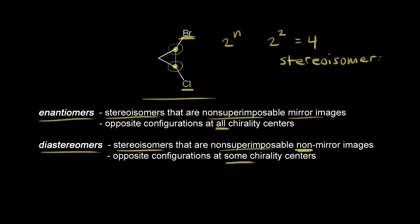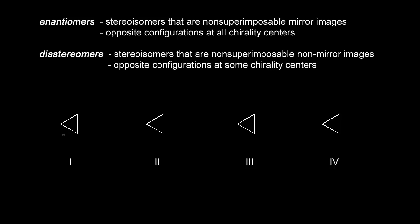2^n is just a maximum, and we'll talk about that in later videos. So let's draw all four stereoisomers and look at the relationship between them. For the first one, we could have both halogens coming out at us in space — so I put the bromine on a wedge and the chlorine on a wedge. Next, we could have both halogens going away from us, so I put the bromine on a dash and same with the chlorine.